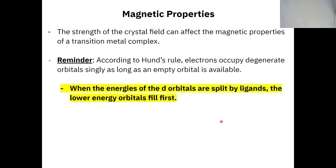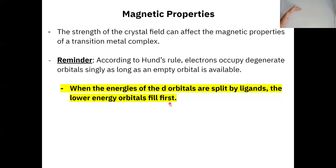Now let's talk about magnetic properties. We've discussed magnetism a few times, and we need to remind ourselves about Hund's rule. Hund's rule says electrons are going to occupy degenerate orbitals singly — one at a time — as long as there are empty orbitals available; they only pair up after everything is full. What's also true here is that when the d orbital energies are split by ligands, the lower energy orbitals will always fill first.